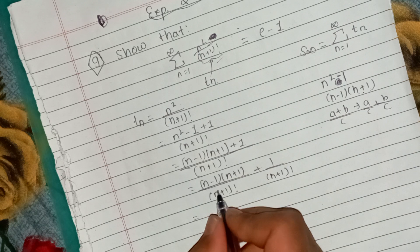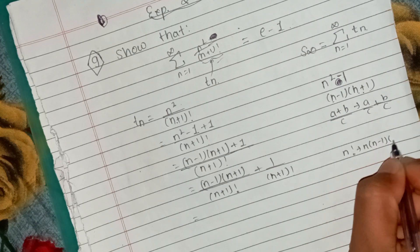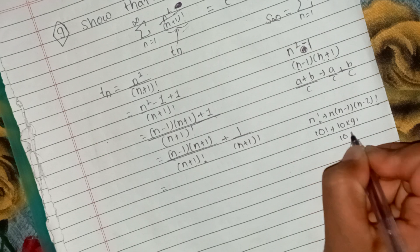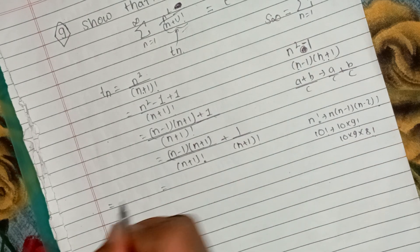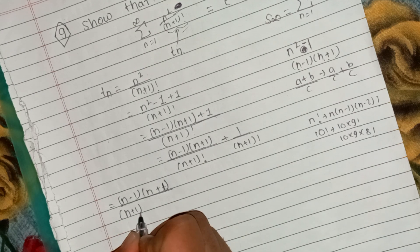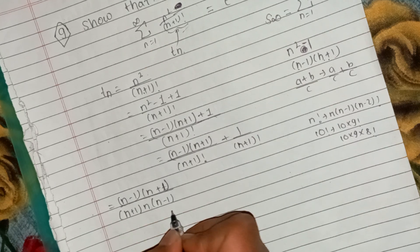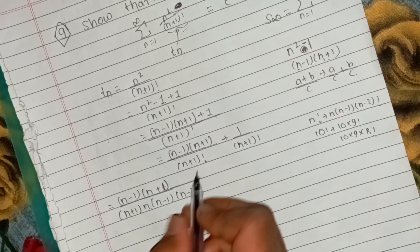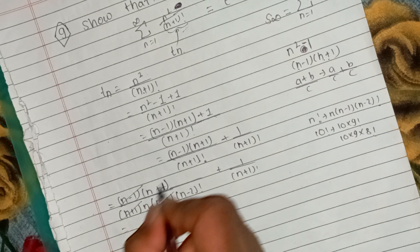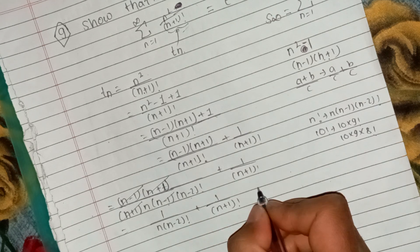Now I have n plus 1 and n factorial here. The n factorial is n times n minus 2. If I expand n factorial I will have n factorial, and then n plus 1 factorial. This gives n plus n plus 1. So Tn equals n minus 1 by n times n minus 2 factorial, plus 1 by n plus 1 factorial. This is the value of Tn.